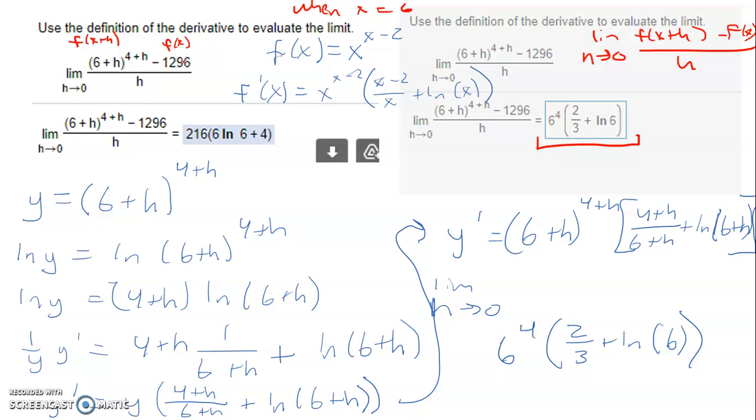When I take the derivative of this constant, it goes away. So I don't have to worry about it. But when I take the derivative of this function, 6 plus h to the power of 4 plus h, I'm going to use the technique of logs. And this is the same value, like ln on both sides. This process would be the same if I was going to take the derivative here. So you can follow the same steps here.